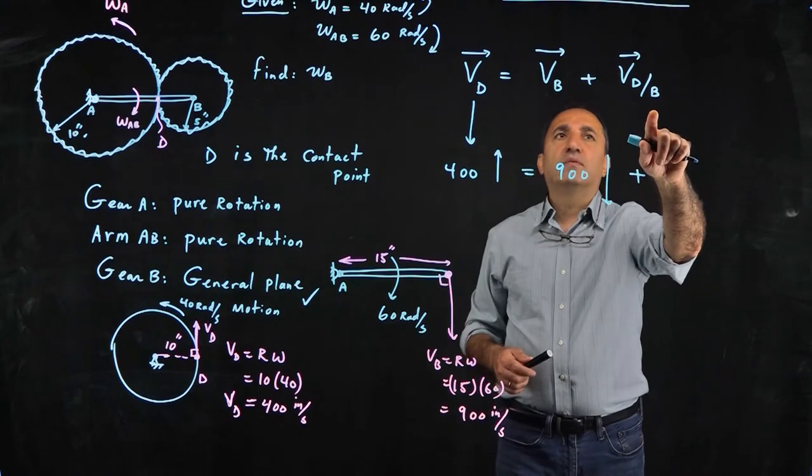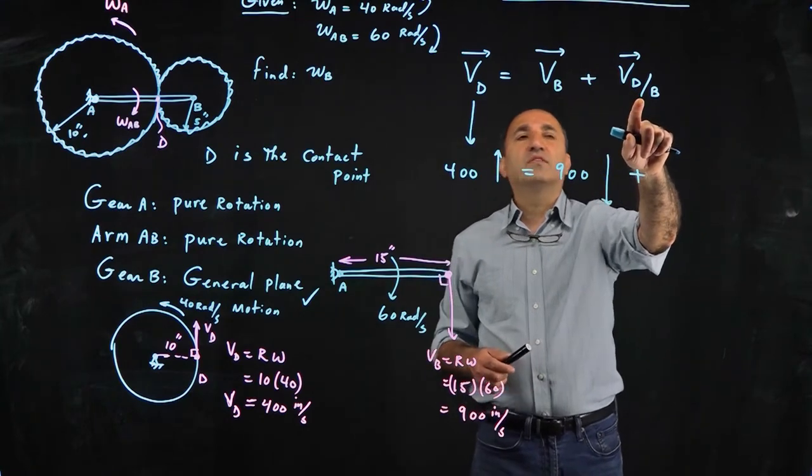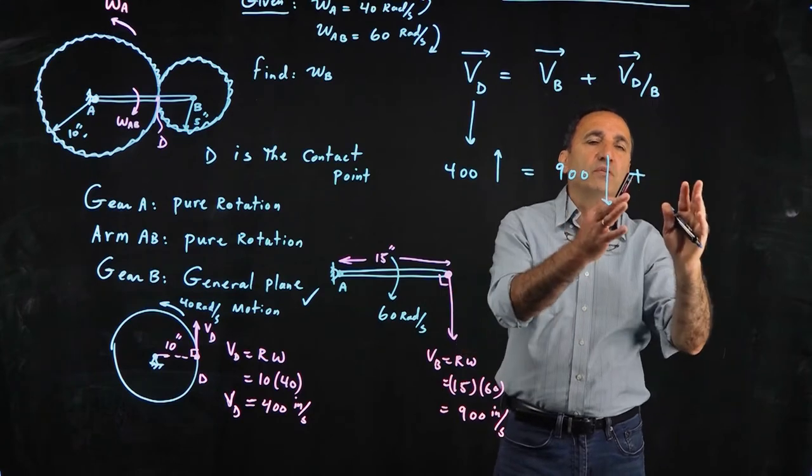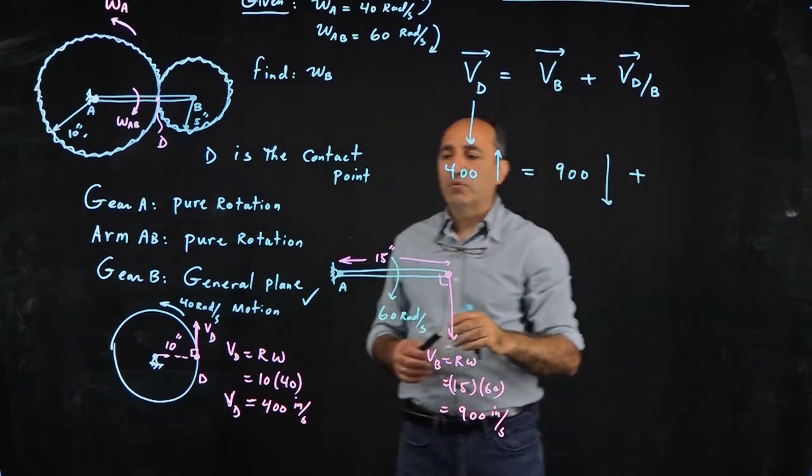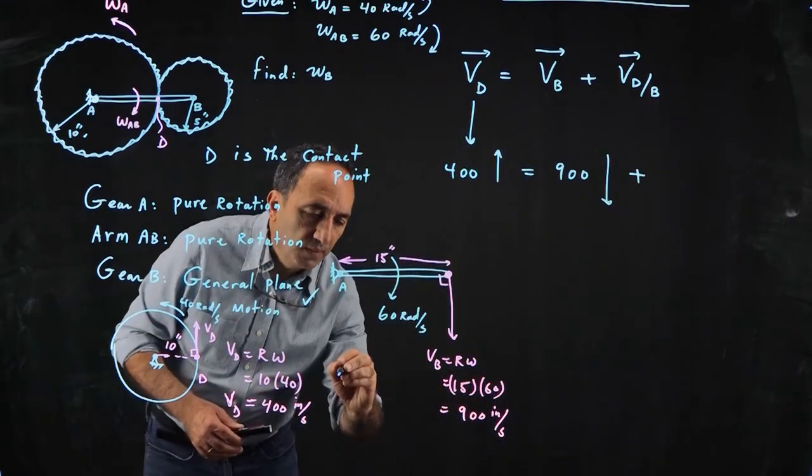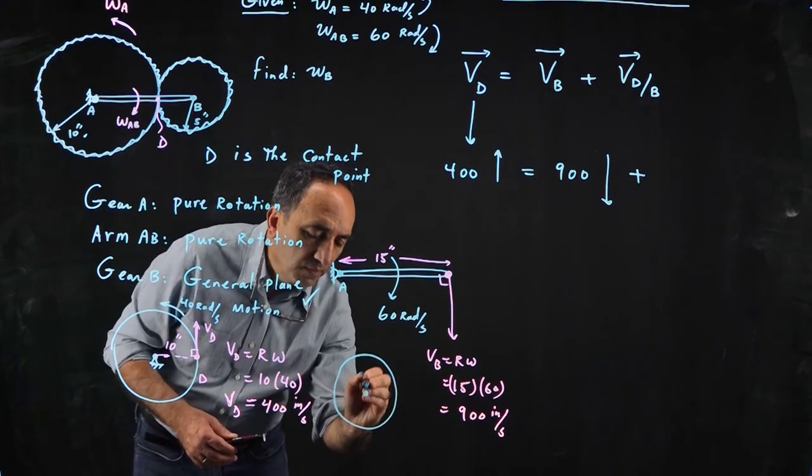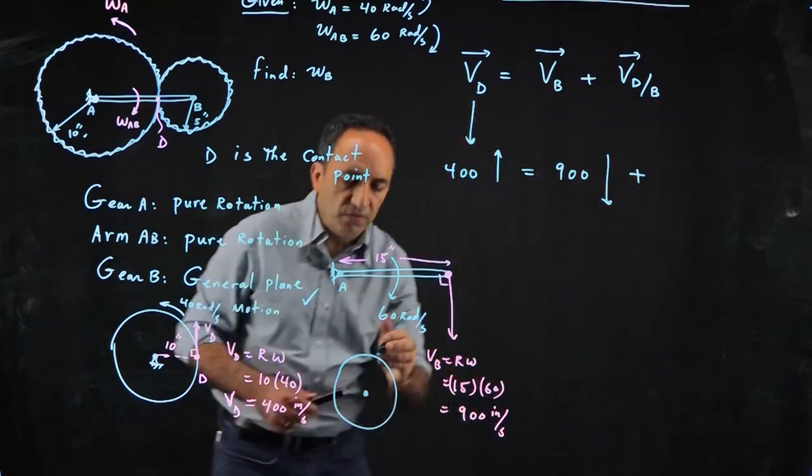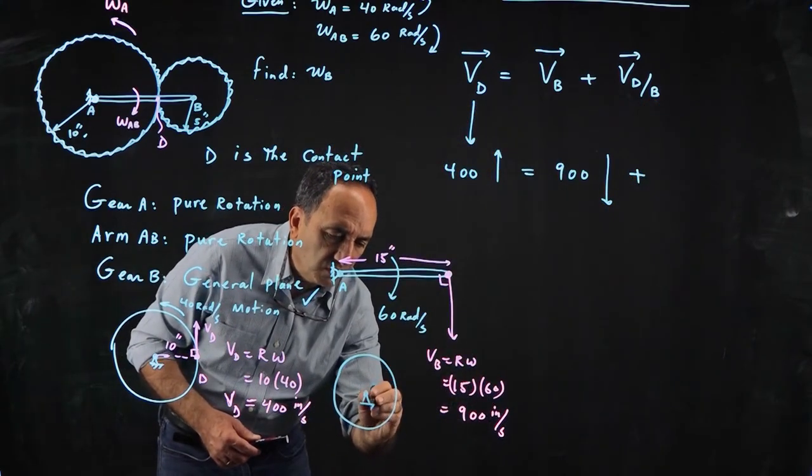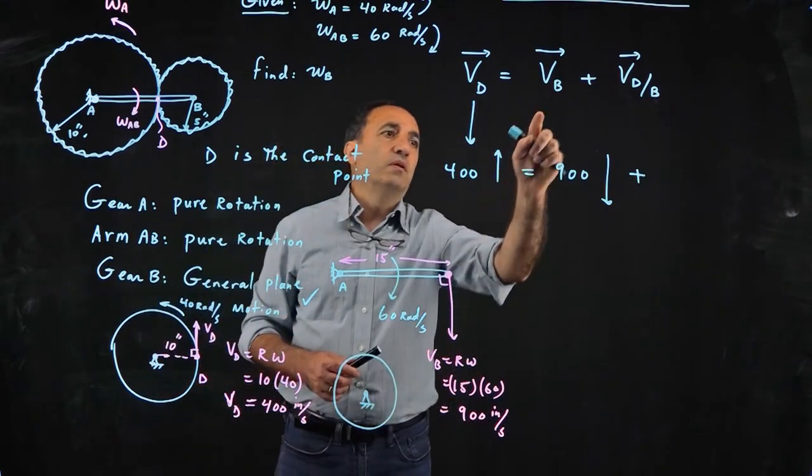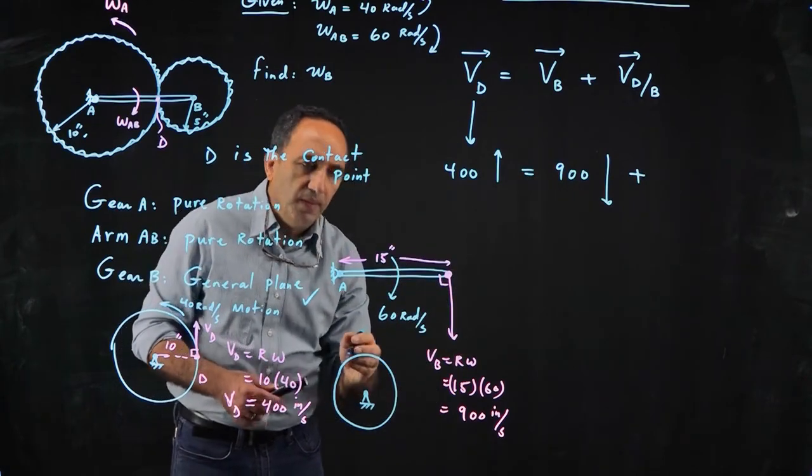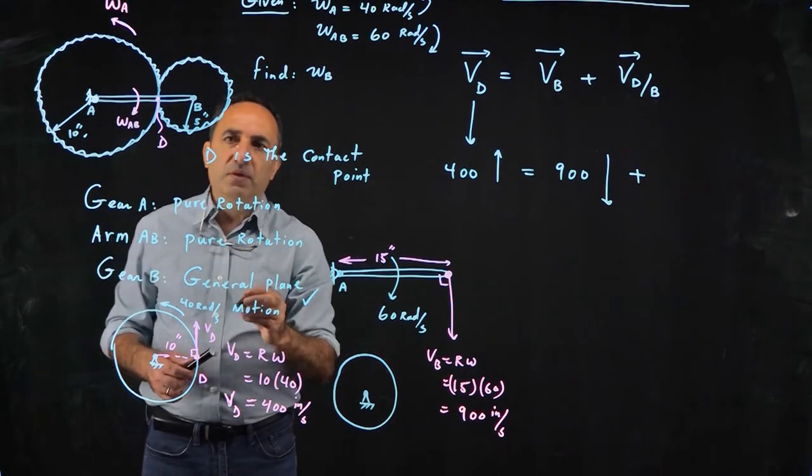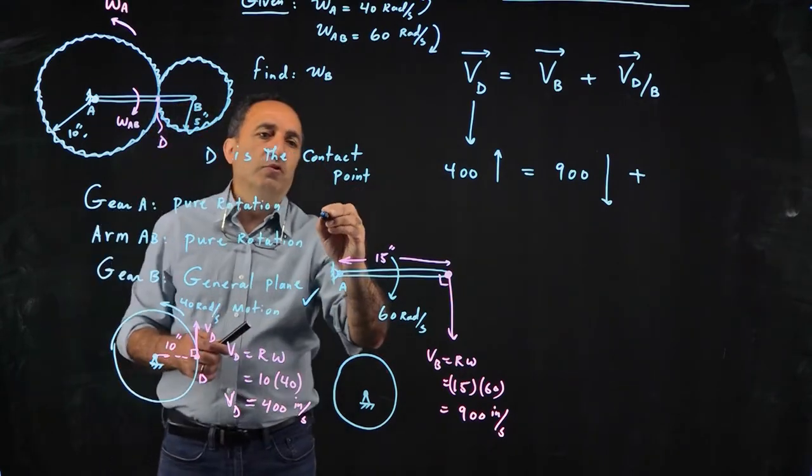And then what is the V_D/B? The way we interpret this, that means find velocity of D as if B is fixed. This is part of the process of using this approach. If you draw gear B, find velocity of D as if B is fixed. So we know B is not fixed, obviously. B has a speed of 900 inch per second.